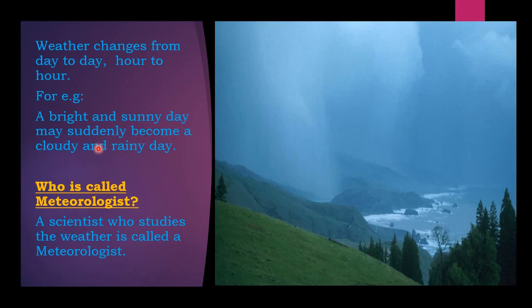A scientist who studies the weather is called a metrologist. There are people — scientists — who study about the earth, the atmosphere, the weather, and its history. Those who especially study about the weather, we call them metrologists.